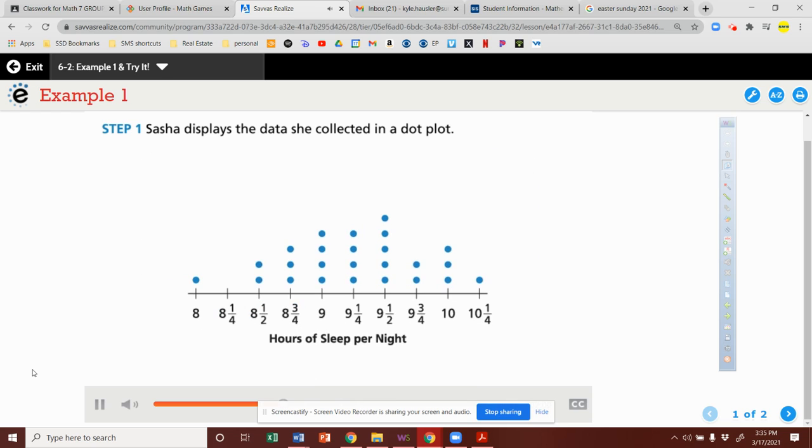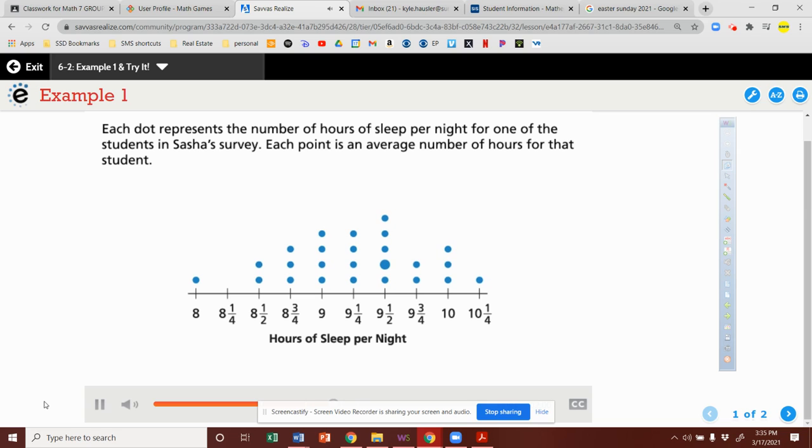Now she has a visual representation that she can use to describe the data. What do the dots in the dot plot represent? Each dot represents the number of hours of sleep per night for one of the students in Sasha's survey. Each point is an average number of hours for that student.